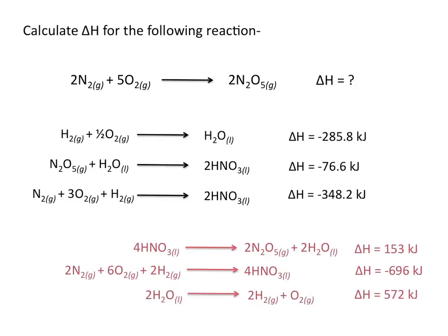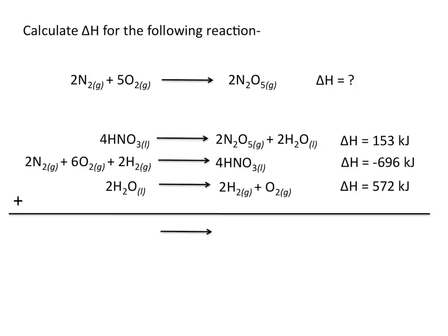Now that we have 2 moles of water on both the reactant and product sides, those will cancel out when we add the equations together. The same goes for our 2 moles of H2 on the reactant and product sides. Remember we add everything on the reactant side together and everything on the product side together, then cancel anything that's the same on both sides.